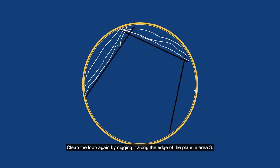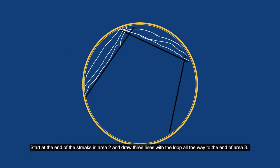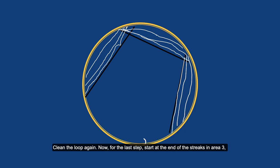Clean the loop again by digging it along the edge of the plate in area three. Turn the plate around so you can get easy access to area three. Start at the end of the streaks in area two and draw three lines with the loop all the way to the end of area three. Clean the loop again.